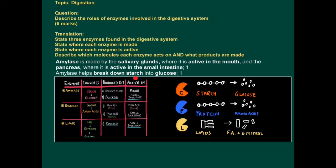And amylase breaks down or helps break down starch into glucose. Those are the products that are made. So we're describing the molecule each enzyme acts on and the products that are made.